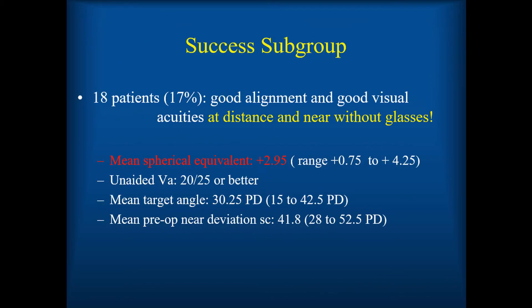There was one interesting success subgroup: 18 patients, or 17%, with this augmentation had good alignment and good visual acuity at distance and near without glasses. We don't promise patients they can remove their glasses — I usually tell them they won't be able to at that time — but 17% we could remove the glasses. Those were the more mildly affected ones, with good vision, a mean target angle of 30 prism diopters, and typically a range of 0.75 to 4.25 diopters of hyperopia.